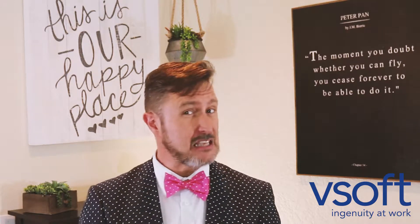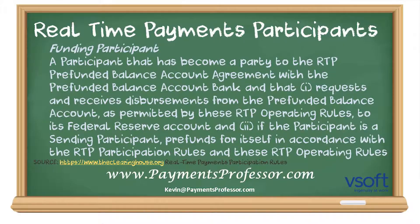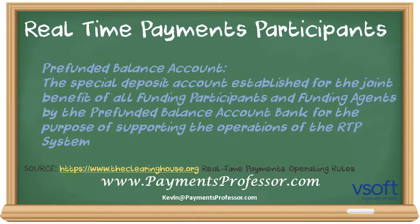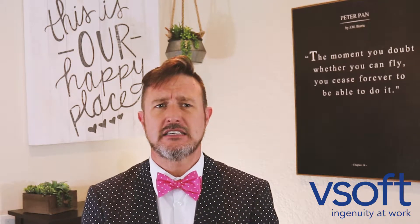The first one is a funding participant — that's a participant that is party to a pre-funded balance account, or really a pre-funded balance account bank, and has an agreement in place. The pre-funded balance account bank is what's going to request or receive disbursements when working with the rules, and that's going to work with the Federal Reserve account too.